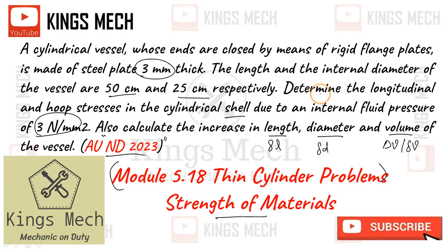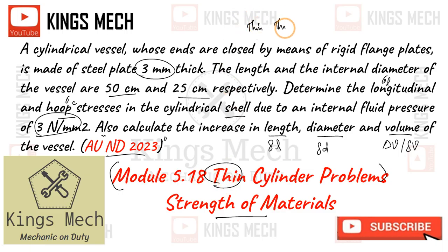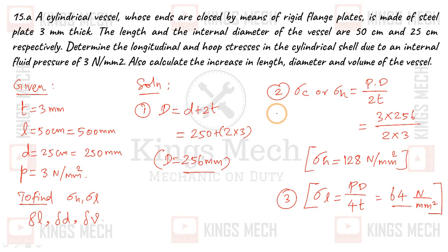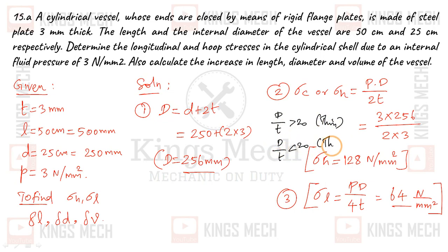We need to determine whether this is a thin cylinder or a thick cylinder before applying the appropriate formulas. The criterion is: if D/t is greater than 20, it is a thin cylinder. If D/t is less than 20, it is a thick cylinder. That's how we classify it. Now, we have a cylinder with internal diameter 25 and thickness 3 — let's check.